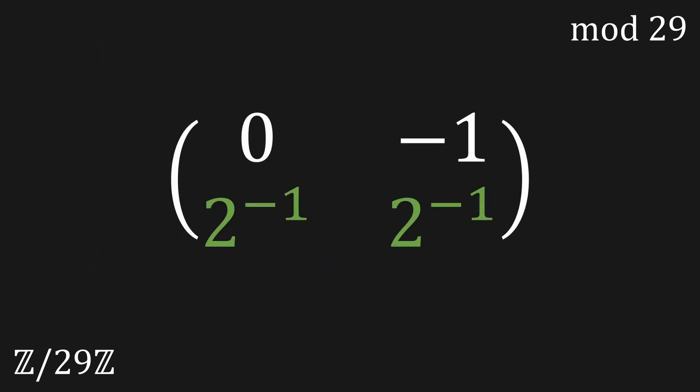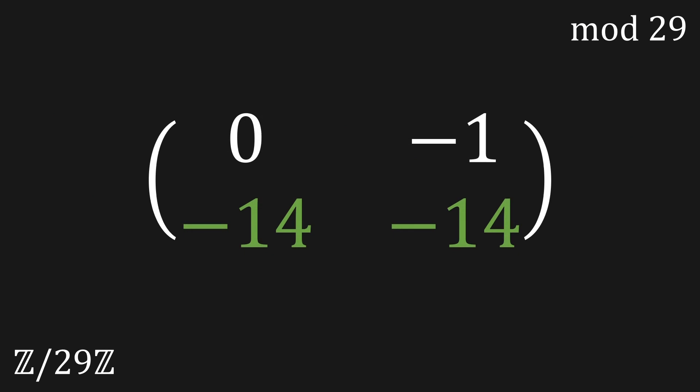Now you simply replace 2 to the minus 1 by the calculated multiplicative inverse of 2 modulo 29 and you are done. Thanks for watching. If there are any questions left, please leave them in the comments.